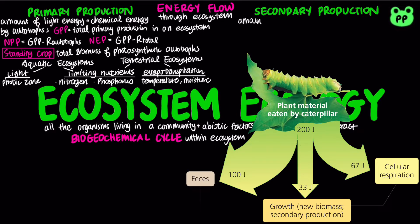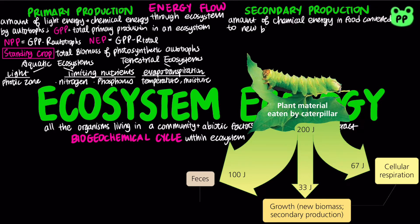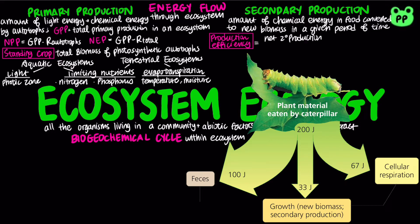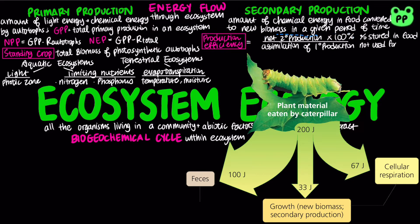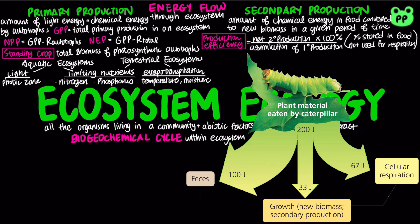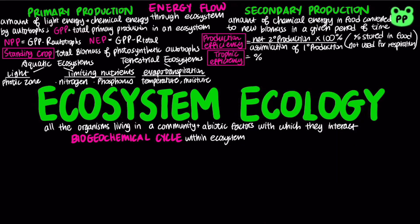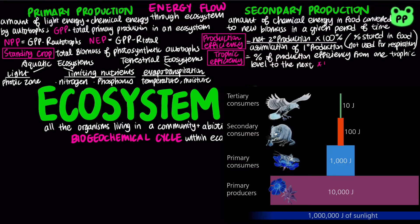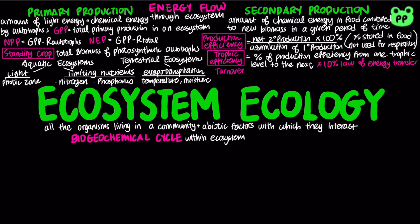Secondary production of an ecosystem is the amount of chemical energy in food converted to new biomass during a given time period. An organism's production efficiency is the fraction of energy stored in food that is not used for respiration, calculated as net secondary production over assimilation. Trophic efficiency is the percentage of production transferred from one trophic level to the next, which is about 10% according to the 10% law of energy transfer. Turnover time is the amount of standing crop over production, and it quantifies how fast the ecosystem is renewing itself.